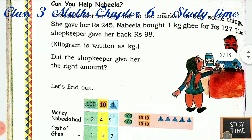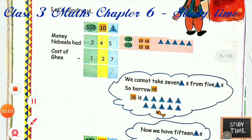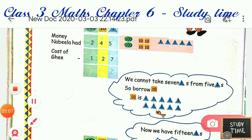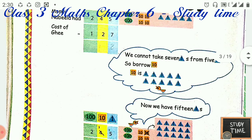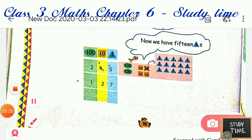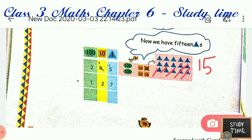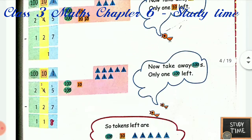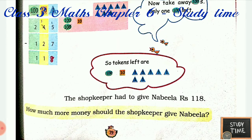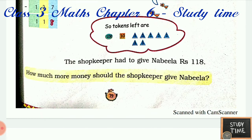Nabila had rupees 245 and the cost of ghee is 127, so we subtract. Here, 5 cannot be subtracted from 7, so you have to borrow 10. If you give this 10, this would become 15. 15 minus 7 gives you 8. Then 30 minus 20 gives you 10. Then 200 minus 100 gives you 100. So the answer is 118. The shopkeeper had to give Nabila rupees 118.